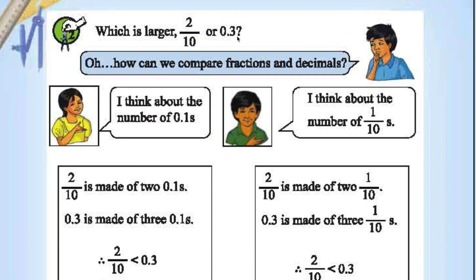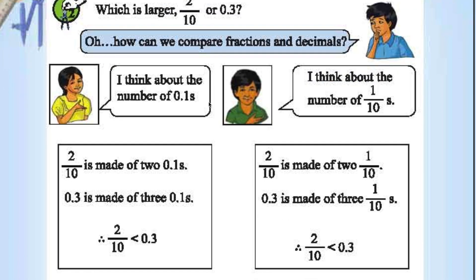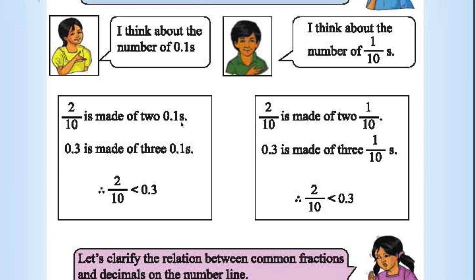Which is larger? 2 by 10 or 0.3? 0.3 is larger. 0.3 is nothing but 3 by 10. Denominators are equal. So in the numerator, 3 is more than 2. So 0.3 is greater than 2 by 10. 2 by 10 is made up of 0.1. 0.3 is made up of 3 0.1. Therefore, 2 by 10 is less than 0.3.